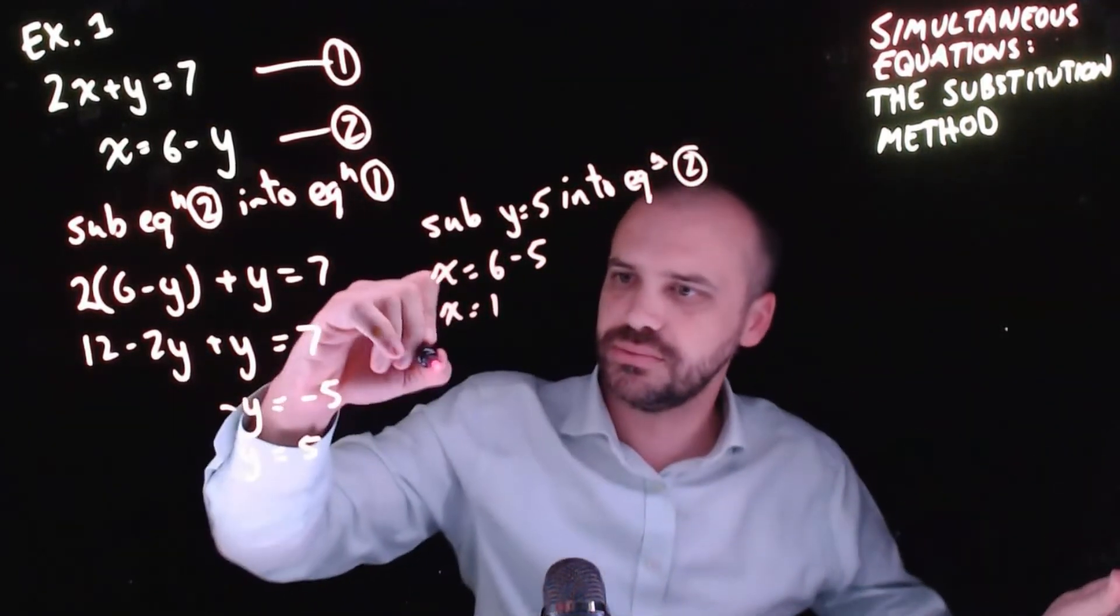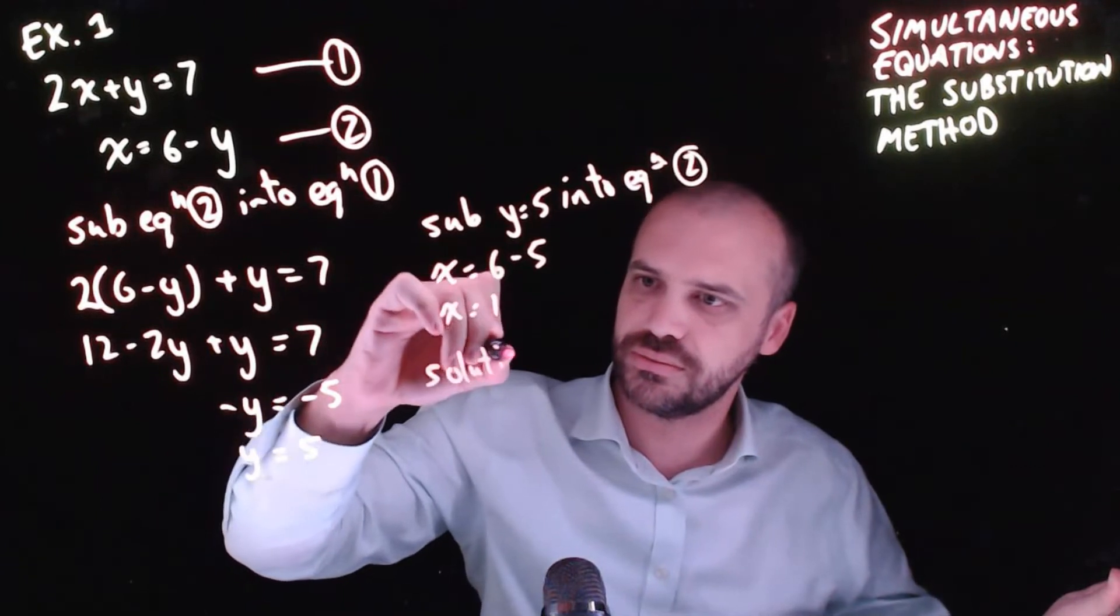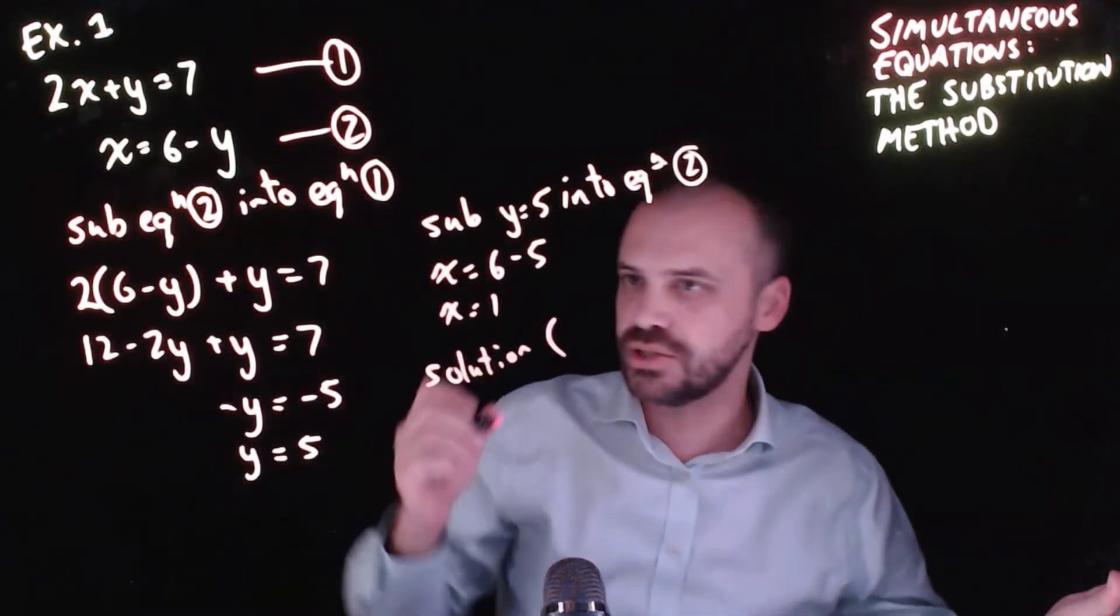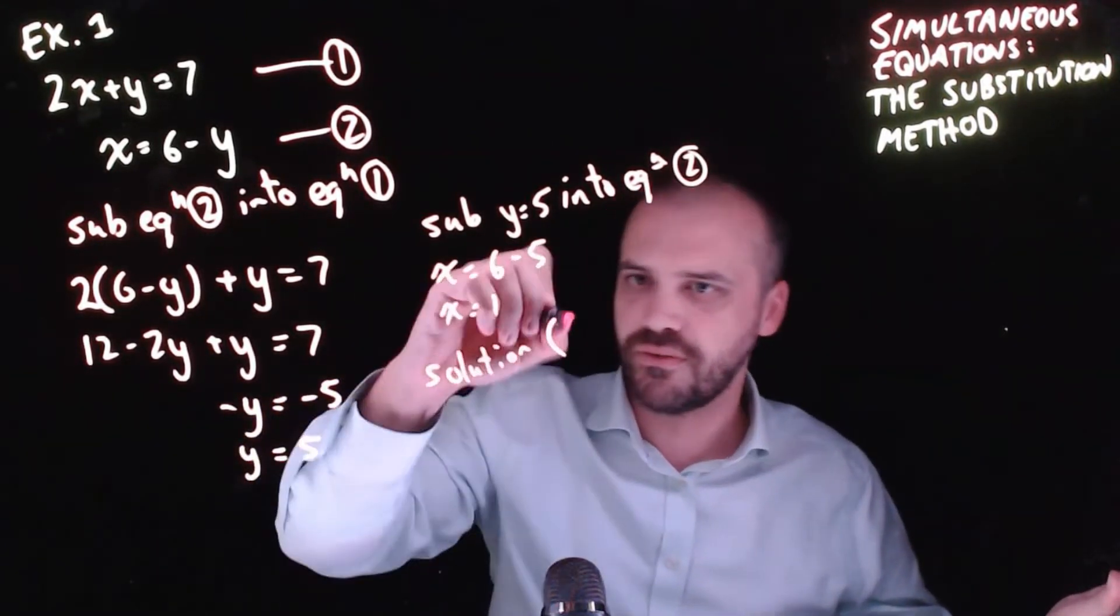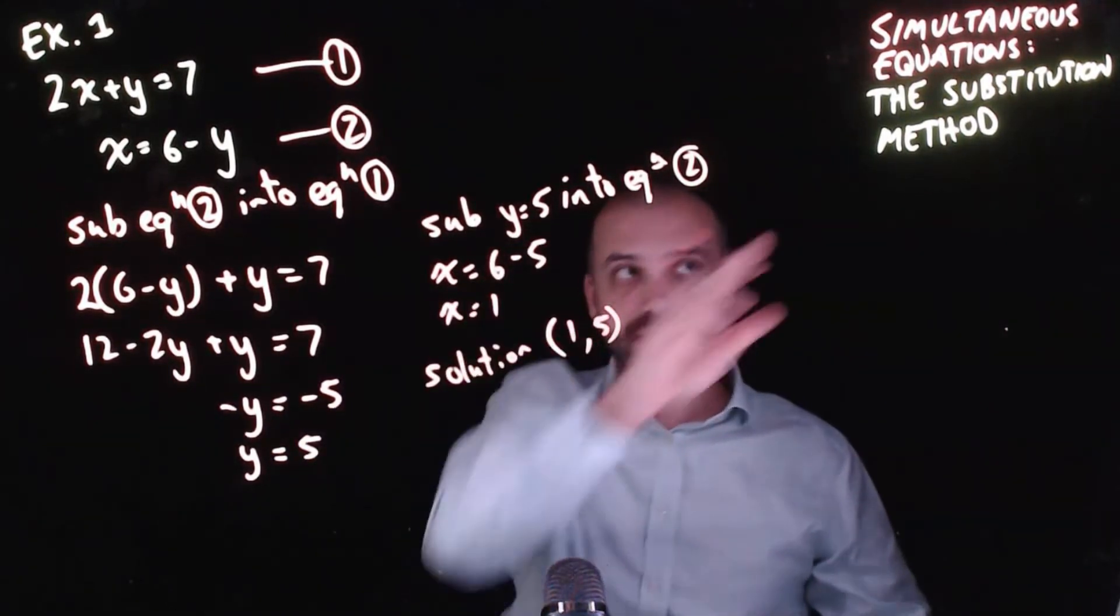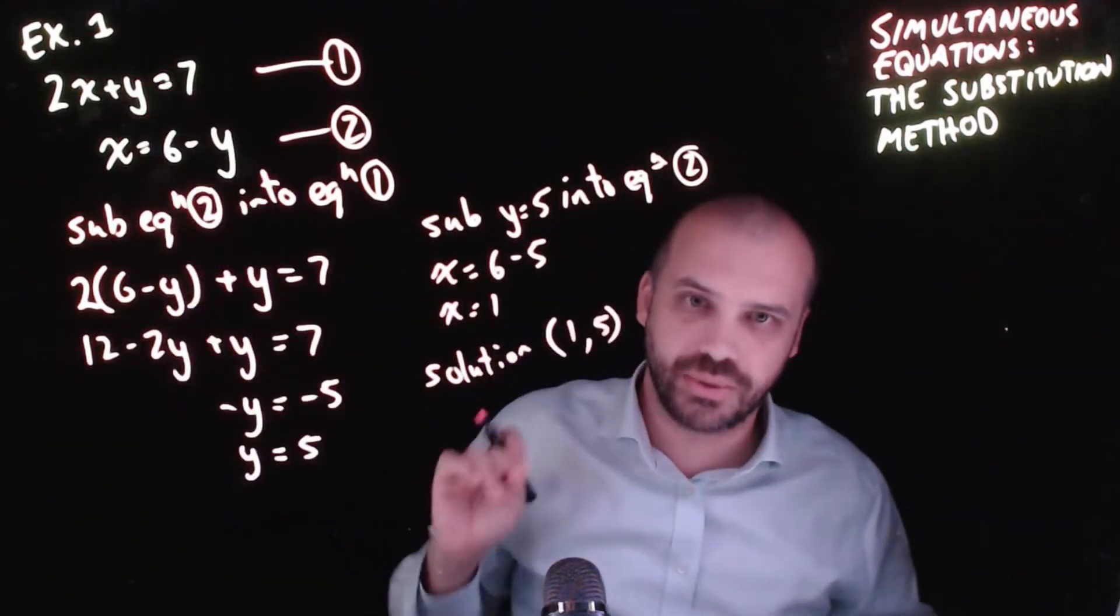My solution to this simultaneous equation is (1, 5). All right, that is substitution. We're subbing one equation into another.